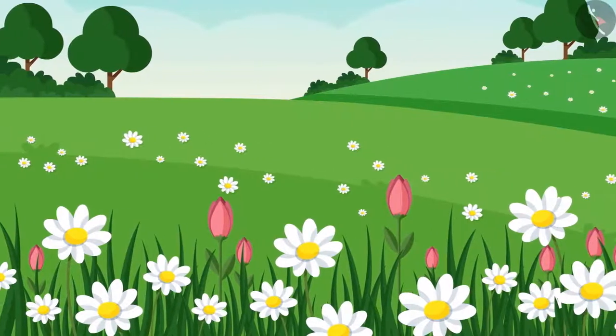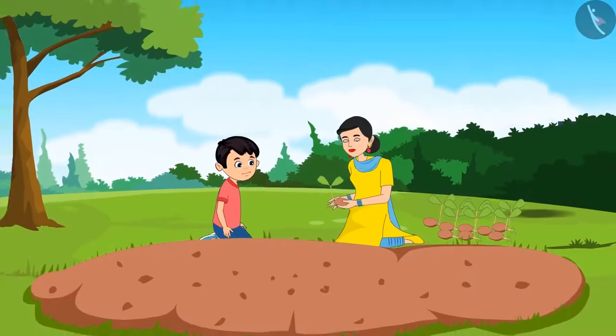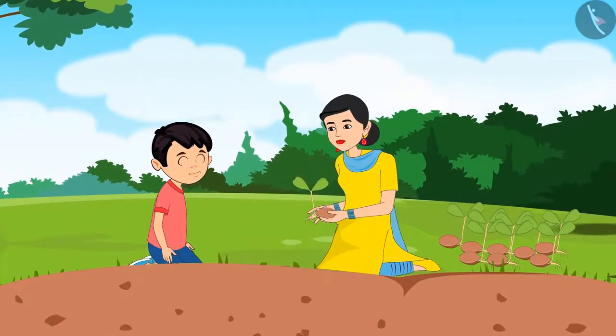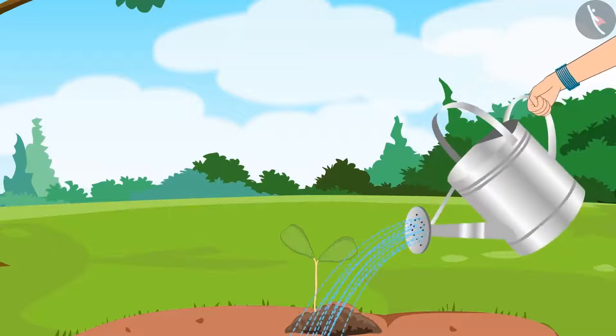Today Chotu is planting saplings in the garden with his mother. Look at this, Chotu. This is the way to plant saplings. After this, we have to water them. Mom, even I want to plant saplings. Chotu, now you also start planting the saplings carefully.